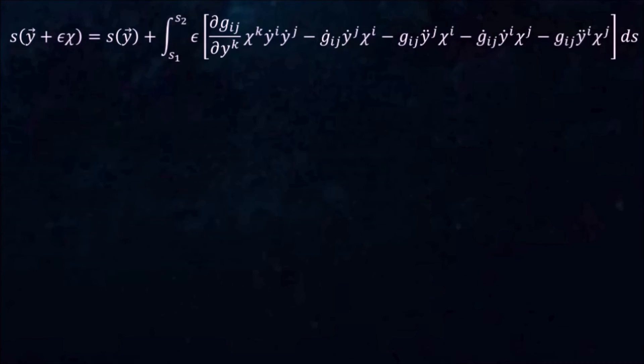Notice that all indices here are summed over and therefore we can relabel them any way we want. Let's relabel them as follows. This allows us to factor out chi.